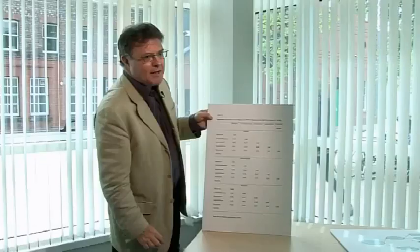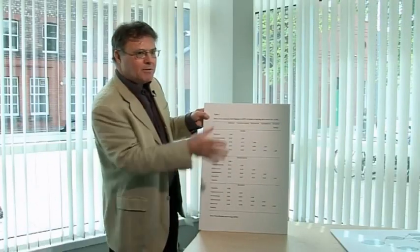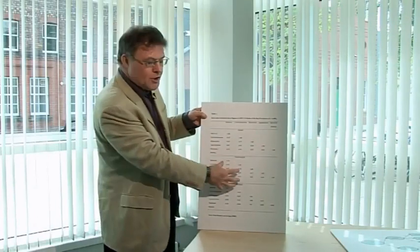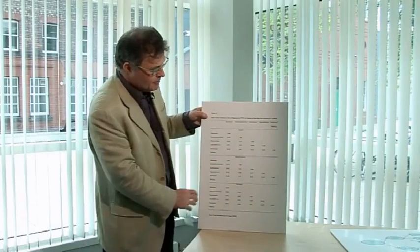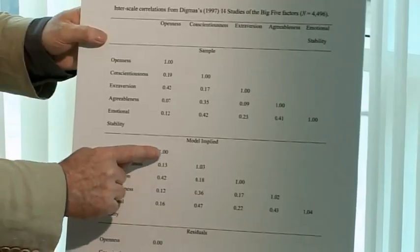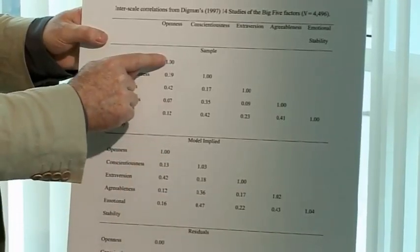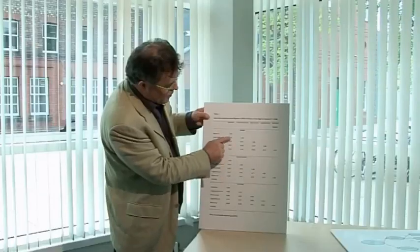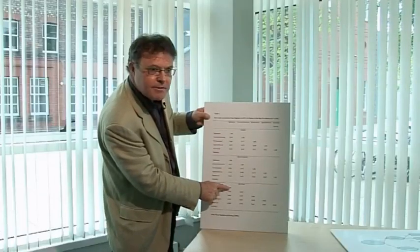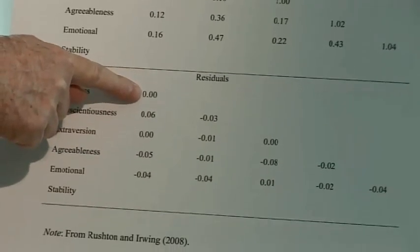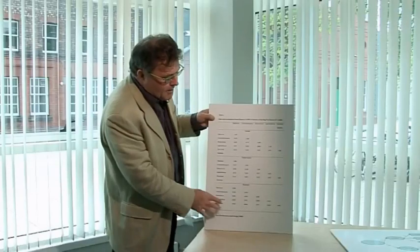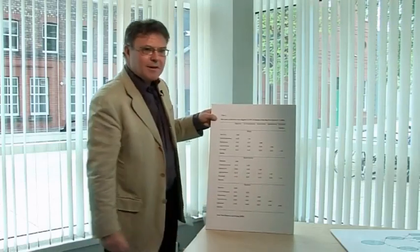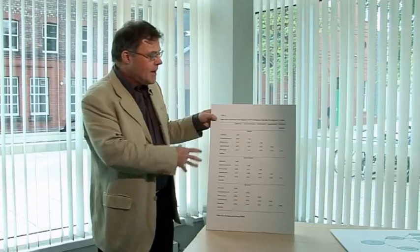Now this is quite clever. We can then take these correlations away from these, so for example, that is one, that is one, so the difference is zero. These are called the residuals. Now if these residuals are all very small, which in this particular case they are, we can say that our factor model is a plausible model of the data.